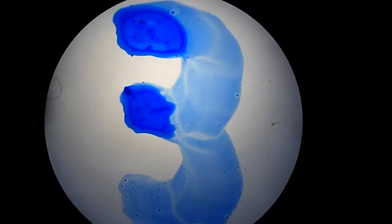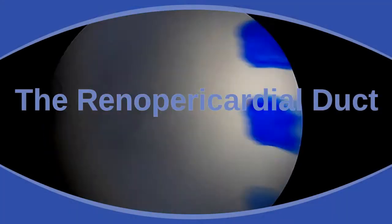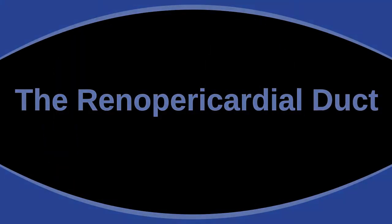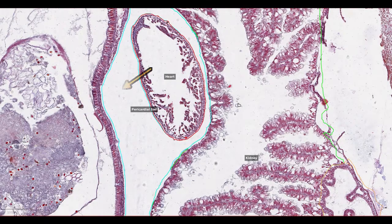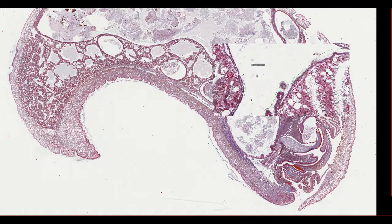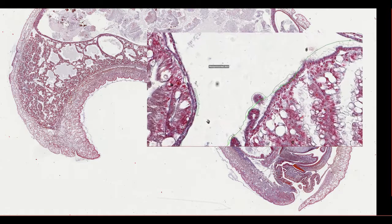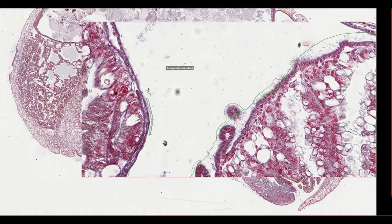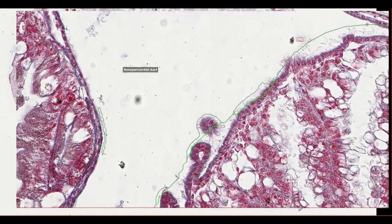Number three: the reno-pericardial duct. Urine that's produced by the filtration in the heart goes into the pericardium. But how does it reach the kidney? Well, by the reno-pericardial duct — a structure that has its origin in snail embryo development.